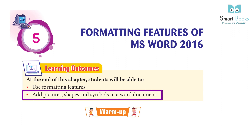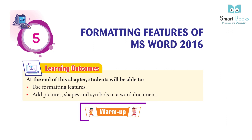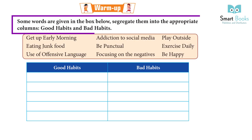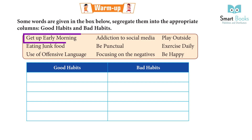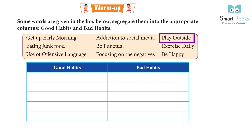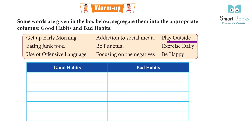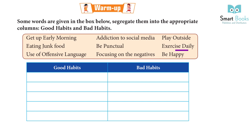Warm up: Some words are given in the box below. Segregate them into the appropriate columns — good habits and bad habits. Words include: get up early morning, addiction to social media, play outside, eating junk food, be punctual, exercise daily, use of offensive language, focusing on the negative, be happy.